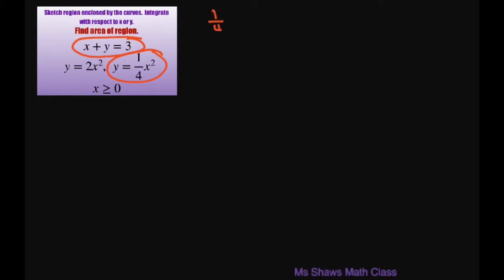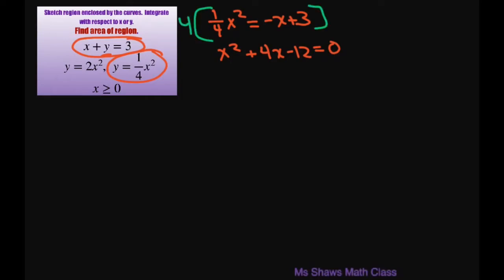Basically what you're going to do is solve for y. So you're going to have 1/4 x squared equals — and if you solve for y here, this is going to be negative x plus 3. That gives you x squared plus 4x minus 12 equals 0, and I just multiplied everything through by 4. When you factor this, you get x plus 6 times x minus 2 equals 0, so x equals negative 6 or 2.